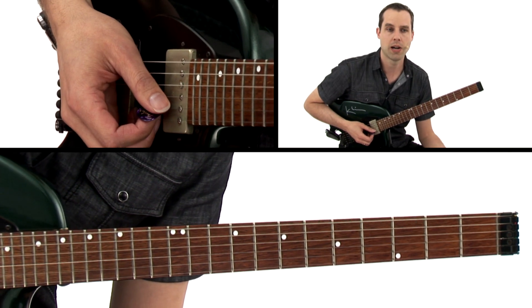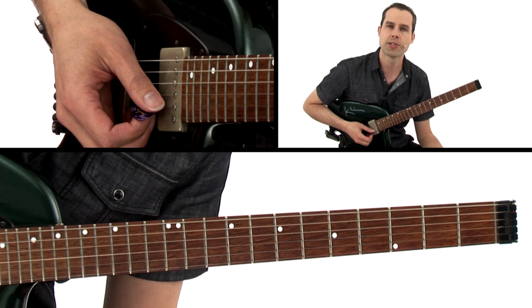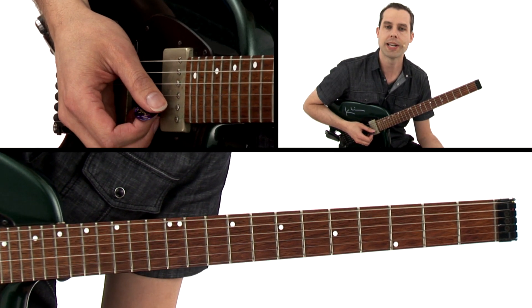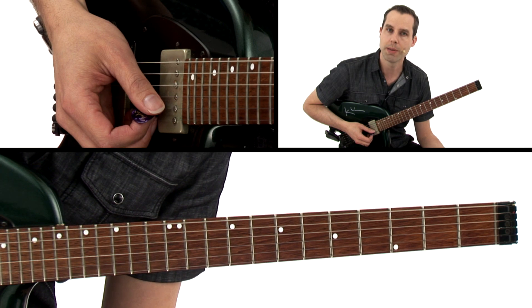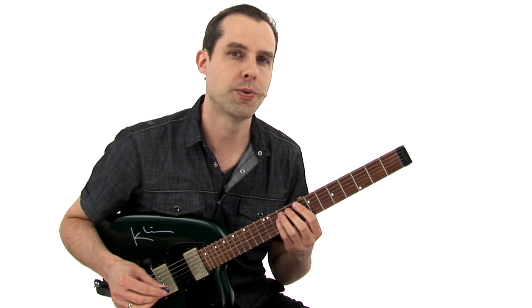So let's talk about how to improvise over this. We have a lot of options, but let's talk about how to take a few of these 2-1-2 shapes and apply them to this to help you improvise. So let's start with the F7 chord.